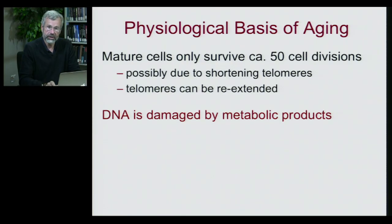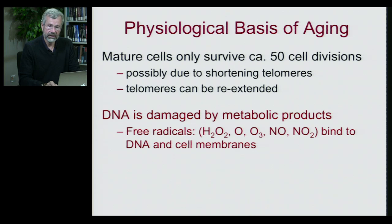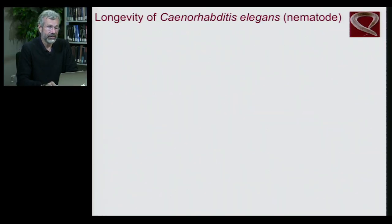The second main mechanism for aging at the cellular level is caused by DNA damage, which is the inevitable consequence of metabolism. Every time we eat or breathe, our cells are exposed to byproducts including hydrogen peroxide, free oxygen, ozone, and nitrous oxide. These compounds bind to our DNA and cell membranes and reduce the function of our cells. When studying the physiology of aging, it's useful to choose a study animal that only lives a few weeks, such as the nematode Caenorhabditis elegans.